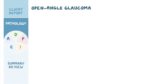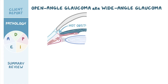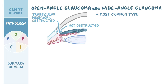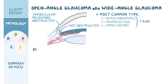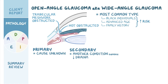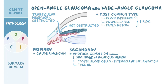In open angle glaucoma, also known as wide angle glaucoma, the angle between the cornea and the iris is not obstructed, but the trabecular meshwork is. This is the most common type of glaucoma, and black individuals and those with advanced age or a family history are at higher risk. Open angle glaucoma can be primary, where the cause is unknown, or secondary to another condition such as a buildup of white blood cells from intraocular inflammation, red blood cells from intraocular bleeding, or parts of the retina in the case of retinal detachment.